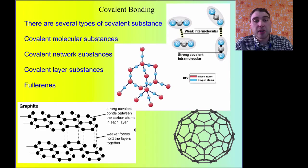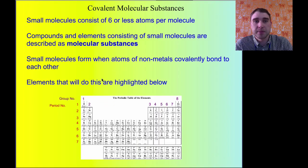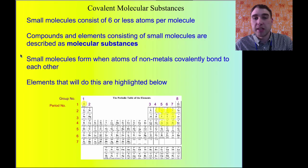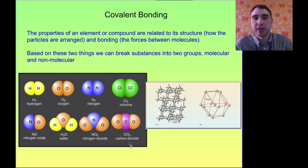There are many types of covalent bonding depending on the atoms involved. You have covalent molecular substances like carbon dioxide, covalent network substances like silicon dioxide, covalent layer substances like graphite, and then fullerenes. Small molecules consist of six or fewer atoms per molecule and are usually called molecular substances. They're made up of hydrogen and top-left non-metals, forming small molecules — examples include hydrogen, oxygen, nitrogen, and chlorine. Compound covalently bonded substances include water, nitrogen dioxide, carbon dioxide, and so on.